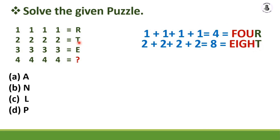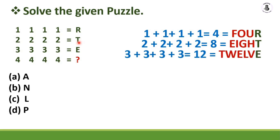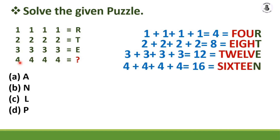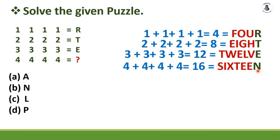Now easy for you to check: 3 plus 3 plus 3 plus 3 plus 3 equals 12. Twelve written as T, W, E, L, V, E — so E is here. Now for the last one: 4 plus 4 plus 4 plus 4 equals 16. Sixteen written as S, I, X, T, E, E, N — so the last alphabet is capital N. That is my answer. From the options, Option B is my right answer.